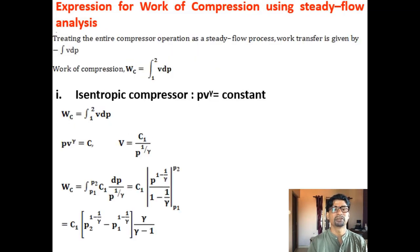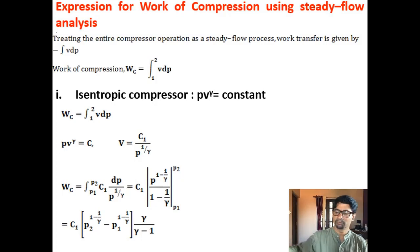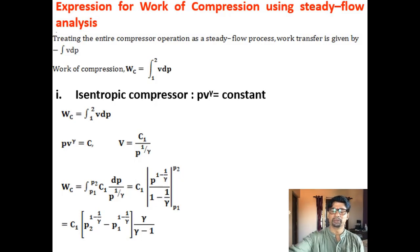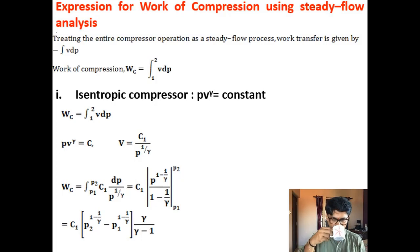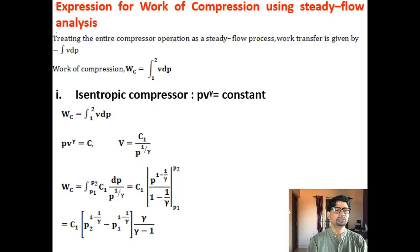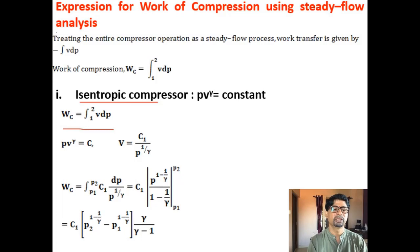Now, the expression for work of compression using steady flow analysis — treating the entire compressor operation as a steady flow process. Work transfer is given by minus integration of VdP. Since it is a compressor, work input is present, so WC = integral from 1 to 2 of VdP. We will derive this for each process. First, isentropic compression: PV^γ = constant.